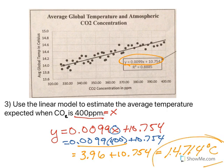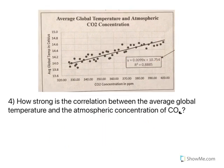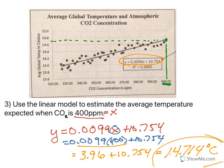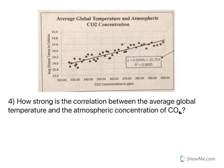Now looking at the graph, here's 400 right here on the end. If I go up, this point right here should be about 14.7. Coming over, it's right between 14.6 and 14.8, which is 14.7. Check your answer — if you're on a graph, you can look at it and make sure it makes sense. If it was way off, you'd know a mistake was made somewhere.